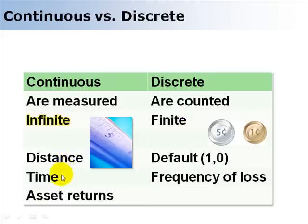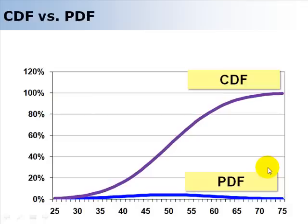Examples of continuous are distance, time, asset returns typically in finance because it's convenient to do that. Discrete examples: an example in finance would be a default on a bond. It's either going to default or it's not. One or zero, not in between. We might characterize the frequency of loss with a discrete random variable and therefore a discrete function.